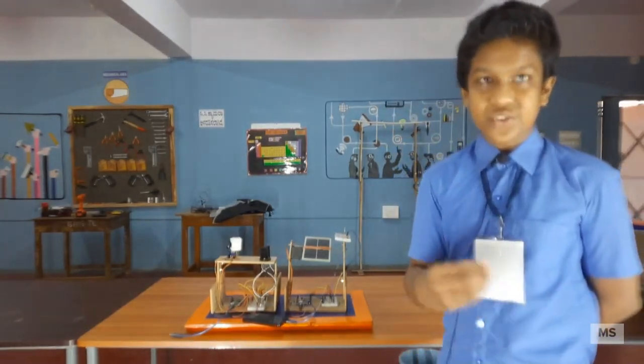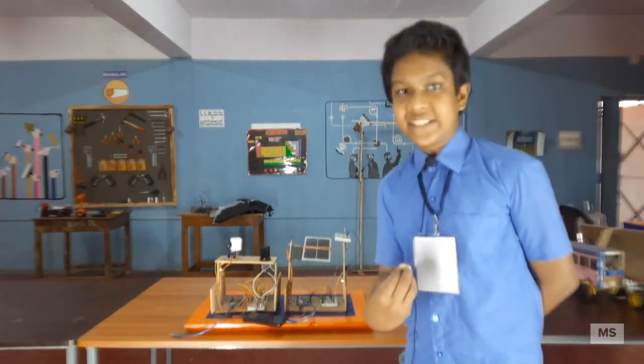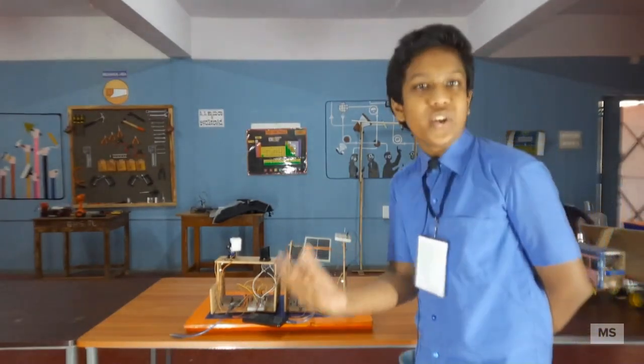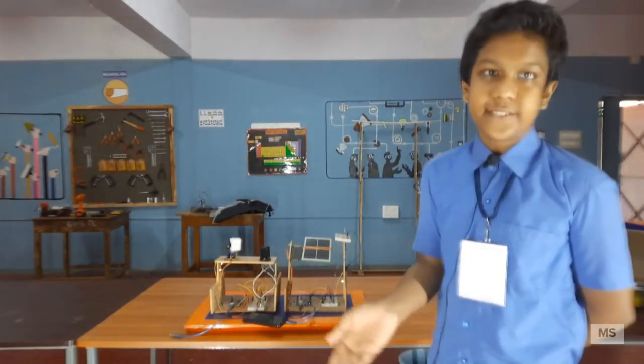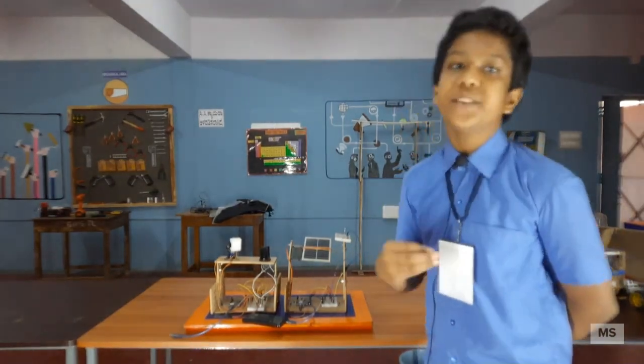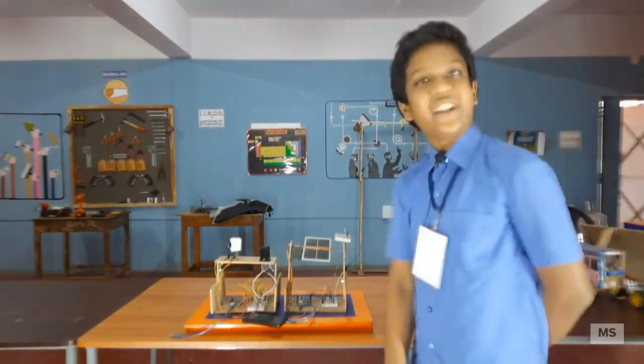What happens in solar panel is the electrons of the silicon atom gets charged and excited and jumps or moves to another silicon atom. So, this produces enormous amount of energy. We can capture it using the solar trackers.